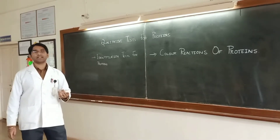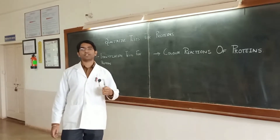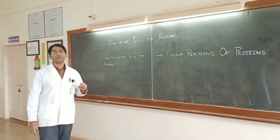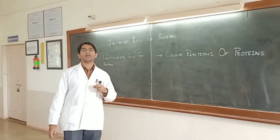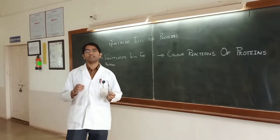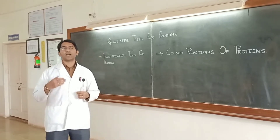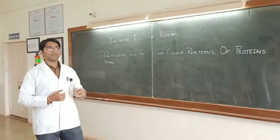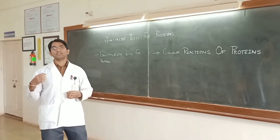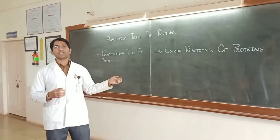Moving on to the next test, we will perform the isolate precipitation test, which gives us information about whether albumin is present in the given sample. Similarly, we are going to perform one more test — the salting-out correlation test — which gives us information with respect to the presence of albumin or gelatin as the proteins, and also whether the given sample contains peptides or not.